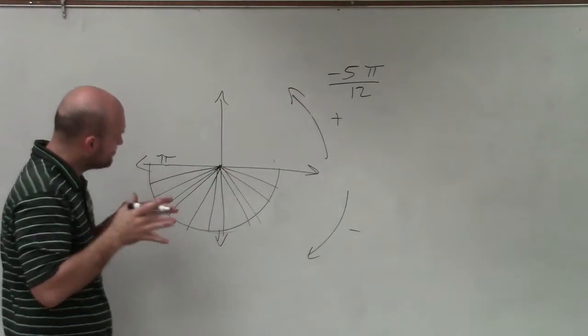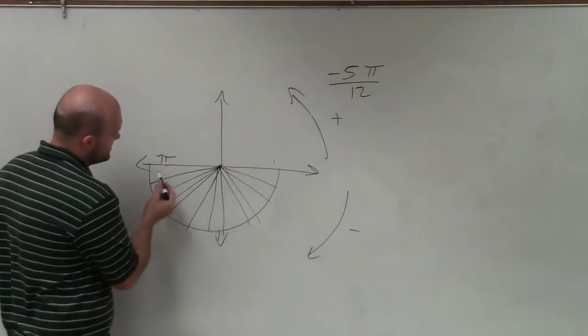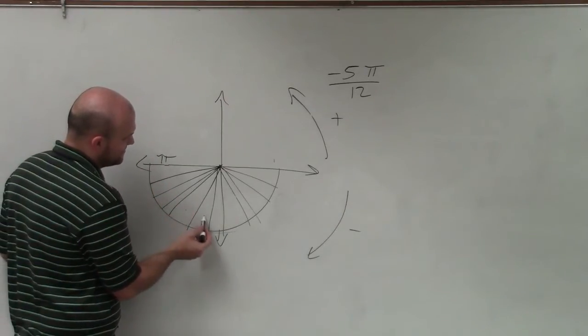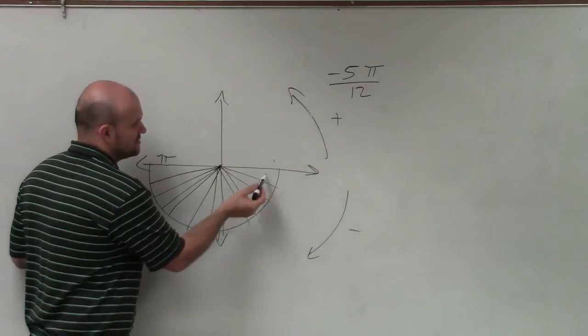And I know not everything is perfectly even, but you can see that I now have 1, 2, 3, 4, 5, 6, 7, 8, 9, 10, 11, 12. So I have 12 parts.